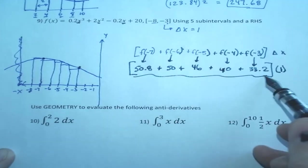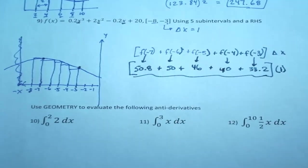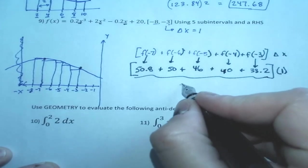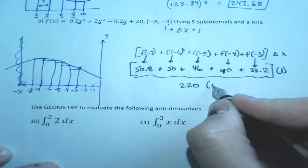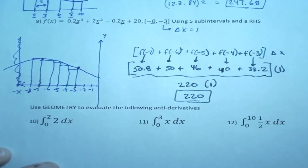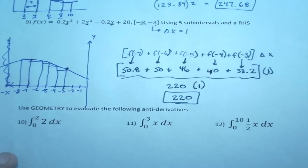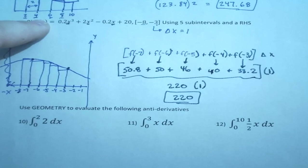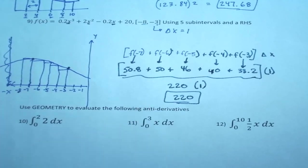So we need to sum these together. So if I sum those together, if I say 50.8 plus 50 plus 46 plus 40 plus 33.2, I get 220 times 1, which is just 220. So the area under this curve is estimated at 220.